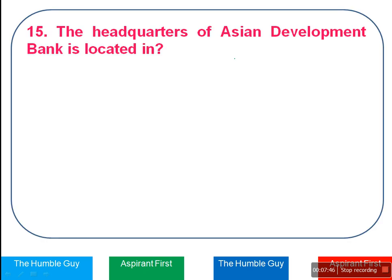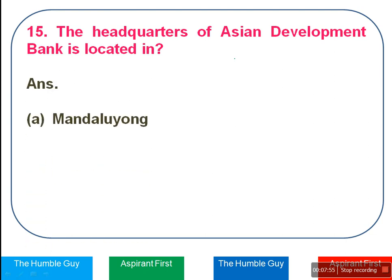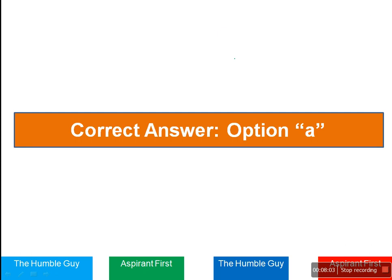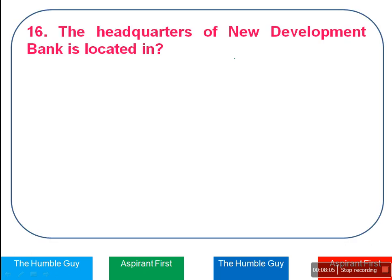Next question: The Headquarters of Asian Development Bank is located where? It is very important to remember the chart of headquarters. The options are Mandaluyong, Shanghai, Brussels, and Vienna. The right answer is Option A — Mandaluyong, in Philippines.